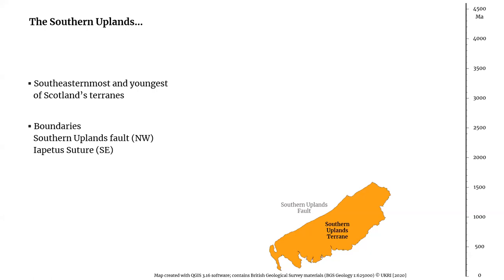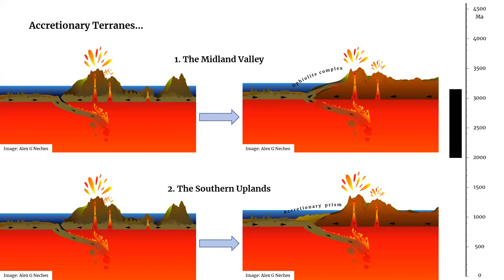Among the terrains that make Scotland, the Midland Valley and the Southern Uplands represent accretionary terrains. In other words, they formed relatively recently and were attached to the margin of the much older continent of Laurentia. The oldest rocks in these terrains are not as old as those of the Hebridean terrain or of the Highlands — they don't date back 2,000 to 3,000 million years ago — but are younger than 500 million years.